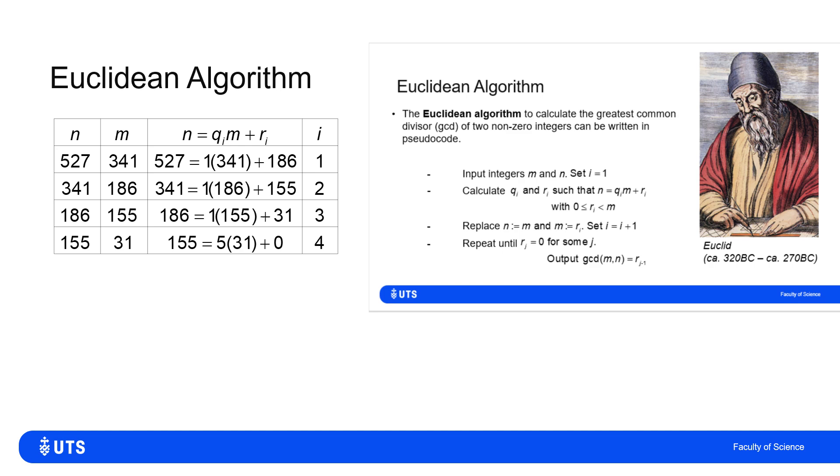So I stop, because I've hit a remainder of 0, and when I hit a remainder of 0, I know that my previous remainder, which in this case was 31, is the greatest common divisor of the two numbers.